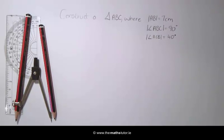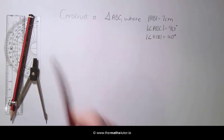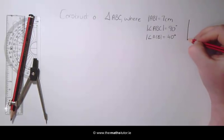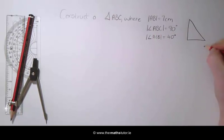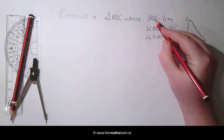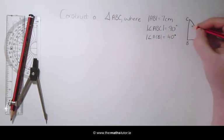The first thing we are going to do is draw a rough sketch of the triangle. We can see that the angle B is 90 degrees, AB is 7 and ACB is 40.